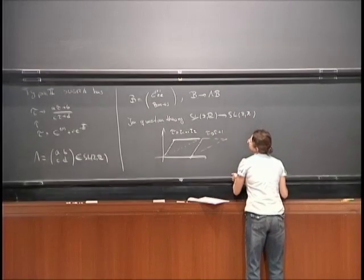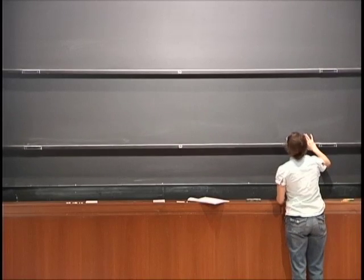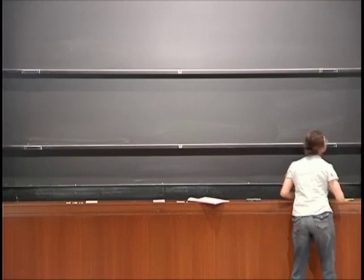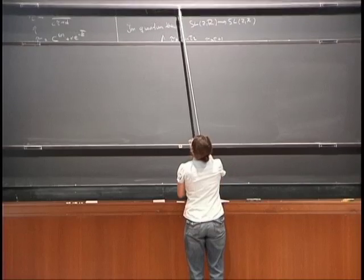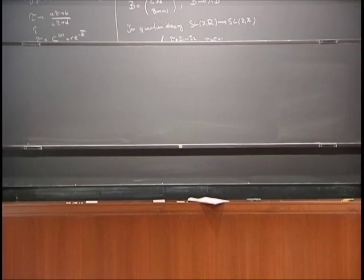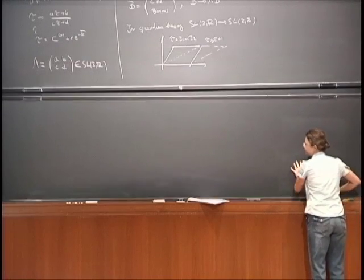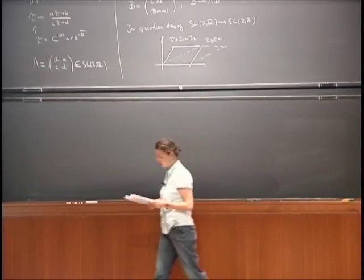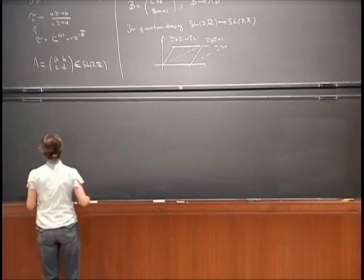Since there is this similarity between the SL(2,Z) acting on the torus and the SL(2,Z) symmetry of Type IIB, one may wonder if there is a geometric interpretation for the SL(2,Z) transformation of Type IIB. And actually there is — this is what I want to explain today.